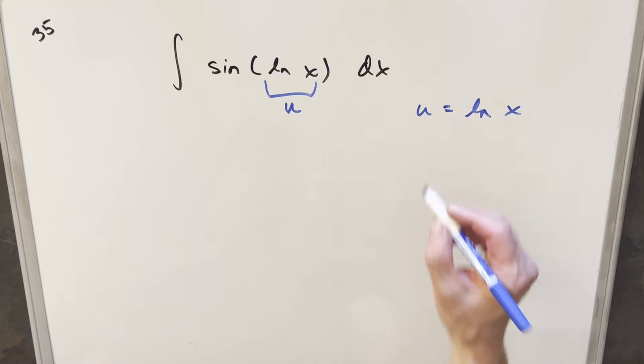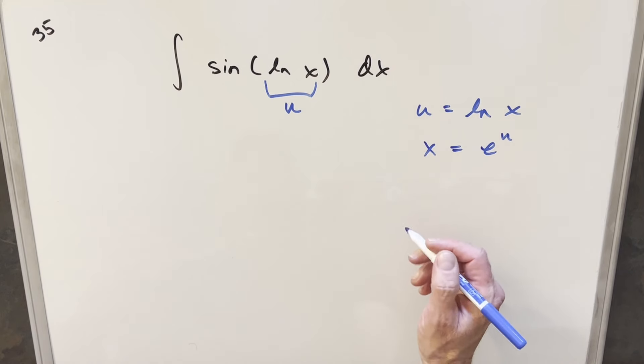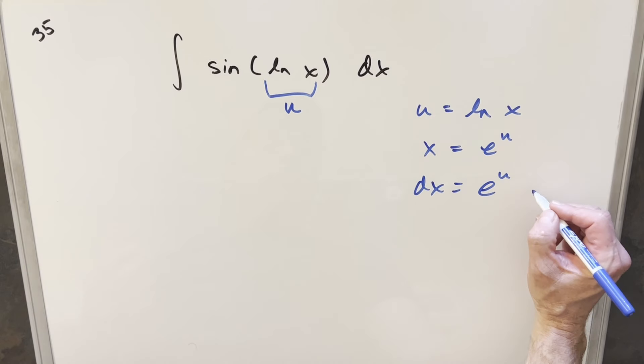I can rearrange this to solve for x, so we're going to end up getting x equal to e to the u. I'll go ahead and take a derivative, so we're going to have dx equal to e to the u du.